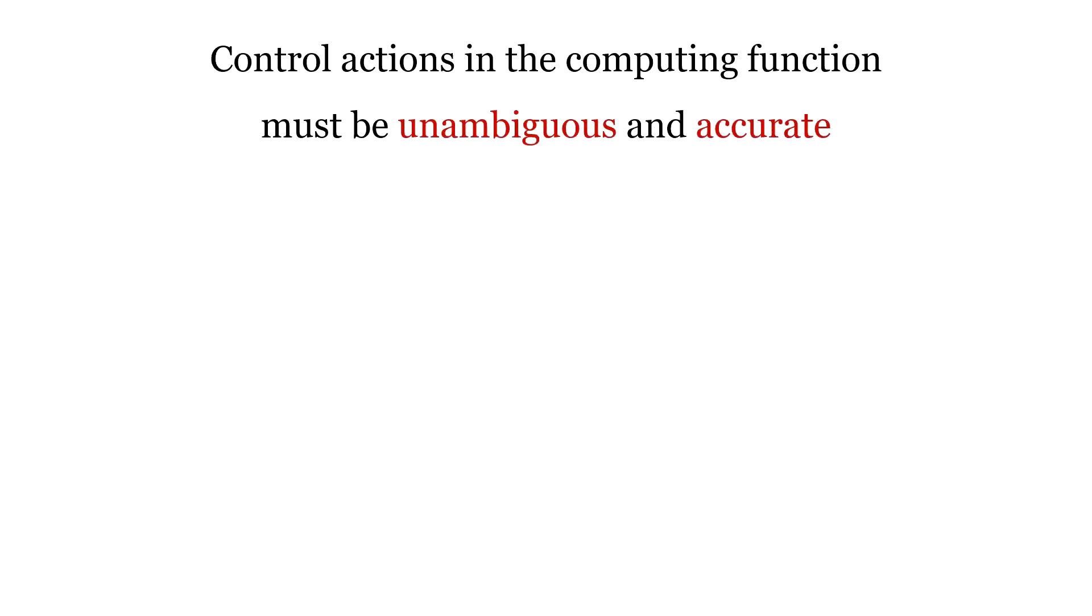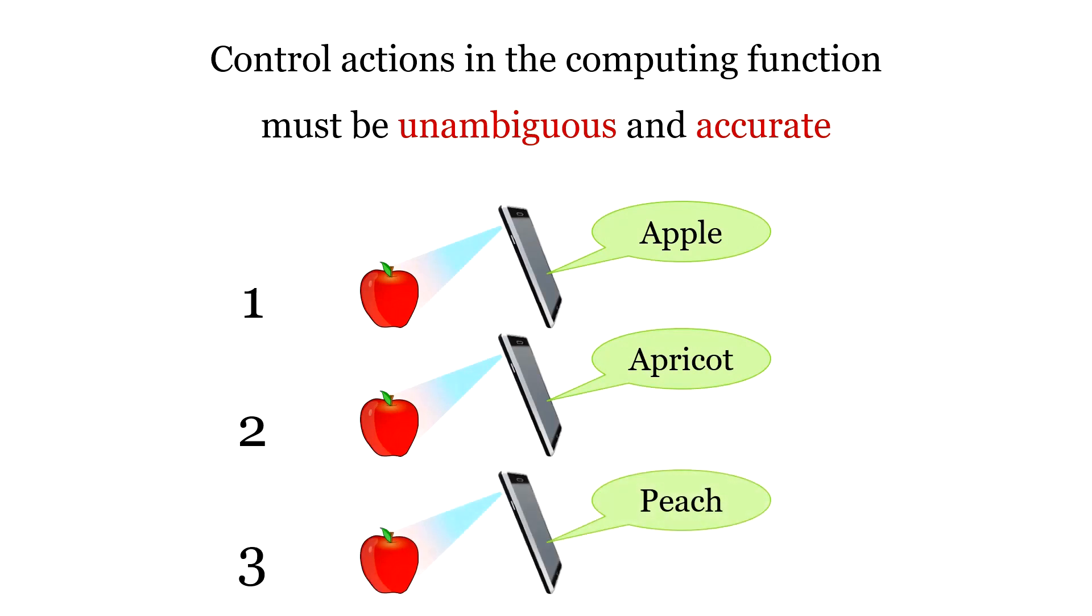The next feature is control action in a computing function must be unambiguous and accurate. It means it must not be the case that each time the function produces different output for the same given input.